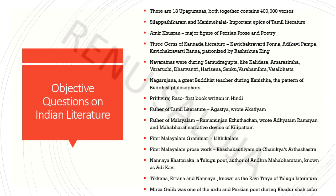Mirza Ghalib और Amir Khusro — they were famous and gave great literary works. Mughal period में हमारा Urdu और Persian literature आया था।